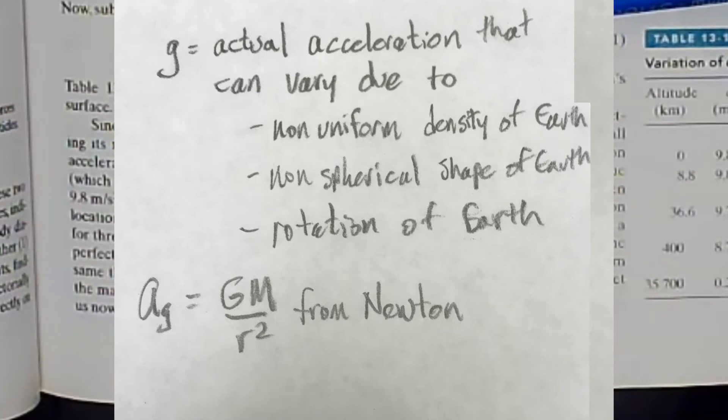Because the measured value of g differs from the calculated value of a_g, the same three reasons mean that the measured weight mg of a particle differs from the magnitude of the gravitational force on the particle as given to us by Newton's law of universal gravitation. Let's take a look at these reasons.